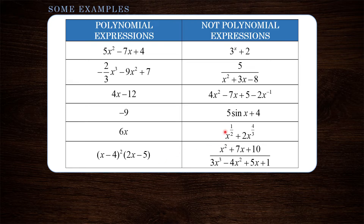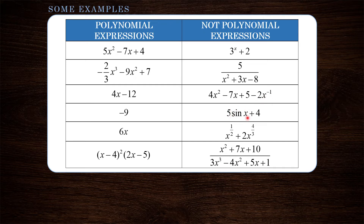Now let's take a look at the right-hand column. All of these are examples of expressions that are not polynomial expressions. Why not? Well, polynomial expressions do not have exponents that are variables. Polynomial expressions do not have the variable in a denominator — we know polynomials have to have whole number exponents, and that one has an integer exponent of negative 1, which is not a whole number. Polynomial expressions do not have trigonometric expressions in them, like a sin x term. And once again, down here we have an expression that has the variable x in the denominator, so that is not a polynomial expression.